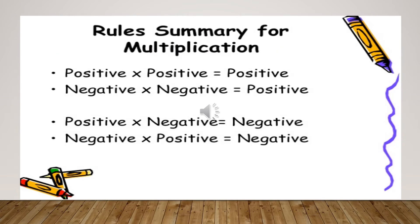Now let's have a quick summary for the rules of multiplication. Positive multiplied by positive will be positive. Negative multiplied by negative will also be positive. Positive and negative multiplied together will be negative. And negative and positive multiplied together will also be negative.